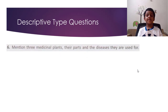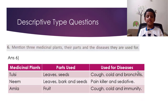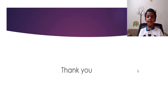Question 6: Mention 3 medicinal plants, their parts and the diseases they are used for. Tulsi — parts used: leaves and seeds — used for: cough, cold, bronchitis. Neem — parts used: leaves, bark and seeds — used for: painkillers and sedative. Amla — parts used: fruit — used for: cough, cold and immunity. Thank you.